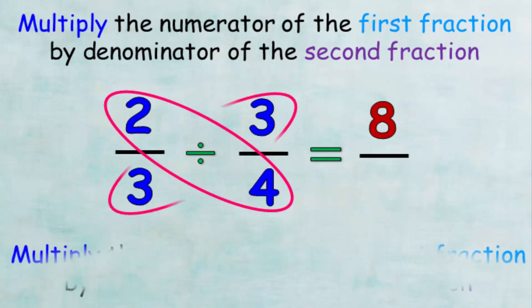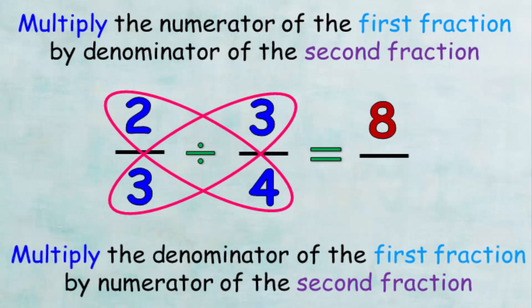Second, we multiply the denominator of the first fraction by the numerator of the second fraction and put the product in the denominator of the resulting fraction. So, 3 by 3 equals 9 and we put it in the denominator. Then, the result of the quotient of two fractions is 8 over 9.